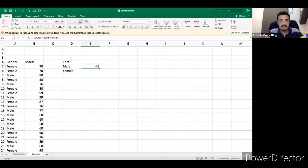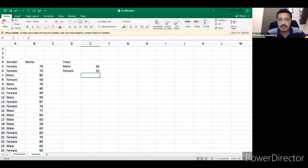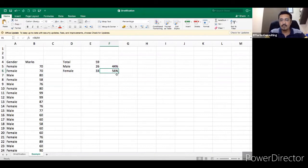Then how many females we have. What I'll do is I'll not do the entire process once again. I will copy here, I will paste in this particular cell, and then I will go into the formula bar and instead of male I will type female. So I come to know that I am having 33 female. What is the total of this? 26 plus 33, so I am having total 59 data points, 59 male and female. Now what is the percentage of this? 26 divided by 59, so I am having 44% of the male. And what is the percentage of female? 33 divided by 59, I am having 56% of the female.